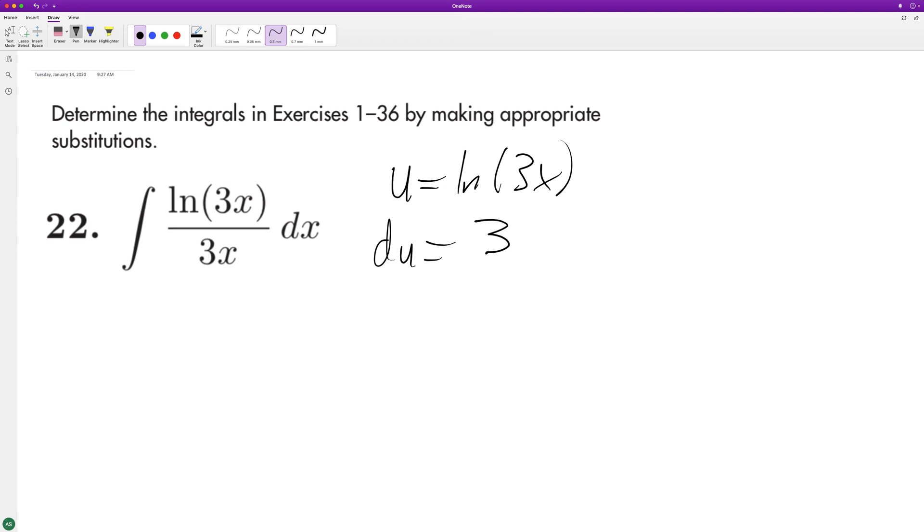And then 3dx, and then times 1 over 3x. So the 3s cancel off, and we're left with 1 over x.